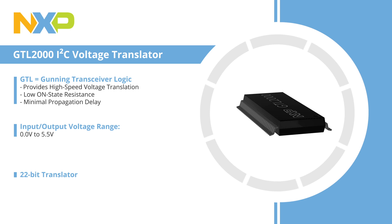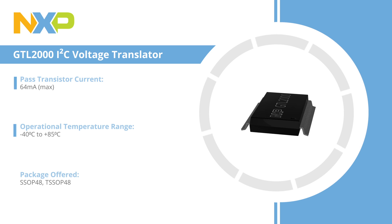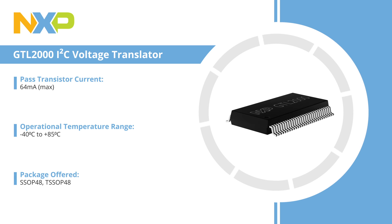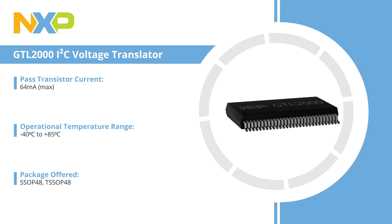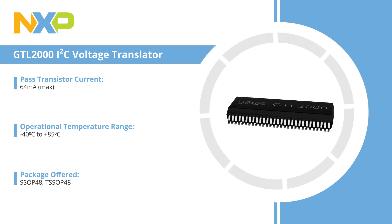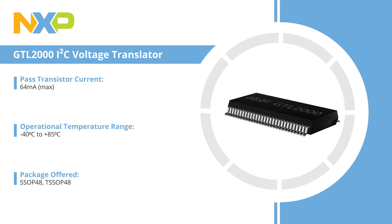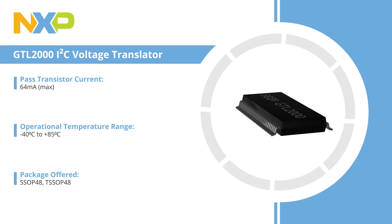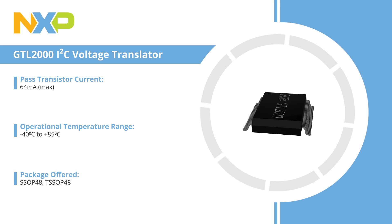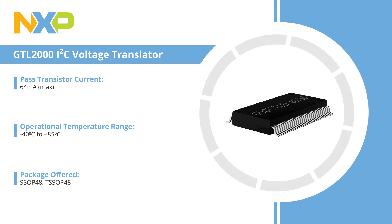NXP's GTL-2000 is a 22-bit, bi-directional, low-voltage translator. This device provides high-speed voltage translation with low on-state resistance, minimal propagation delay, and allows for seamless translation between higher and lower voltages selected by the user without the need for directional control.